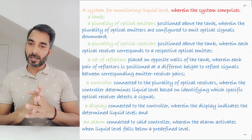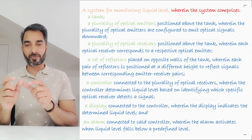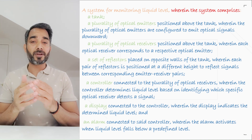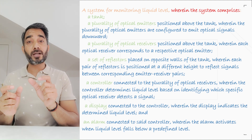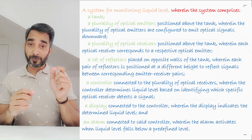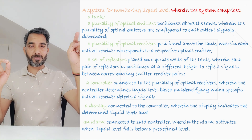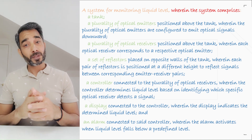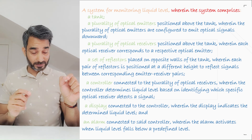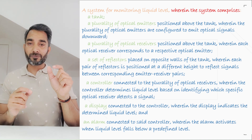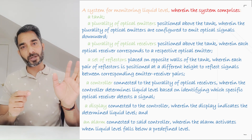Moving on, we have a set of reflectors. Here you could have written 'a set of reflectors' or 'a plurality of reflectors' — I chose 'a set of reflectors' because that's the term used in the disclosure. Again, we define where they are placed: on opposite walls of the tank, wherein each pair is positioned at a different height to reflect signals between the corresponding emitter-receiver pair. Then comes the controller and its functionality: a controller connected to said receivers, wherein the controller determines liquid level based on the signals it receives from the corresponding receivers. So if received from R1 the level is L1, from R2 the level is L2. We have not written L1, L2, L3 because we want to keep it broad enough to cover any number of levels.